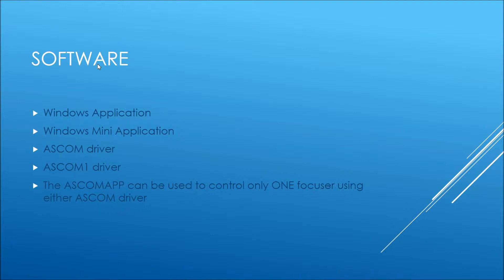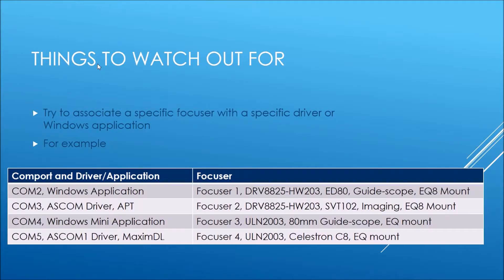The ASCOM app can be used to control only one focuser because it uses a single ASCOM driver. You cannot run multiple instances of the Windows applications or ASCOM drivers, because when the program starts it creates a settings file that remembers the focuser settings each time you run it. If you were to run it with a different focuser, you'd be in big trouble. So what we try to do is associate a specific focuser with a specific driver or specific Windows application and not swap and change them, because the focuser settings are saved in the application and changing the controller could cause things to go horribly wrong. Here we have four different focuser controllers controlling different things on different mounts, each controlled separately.